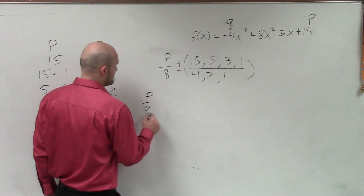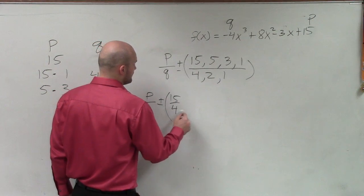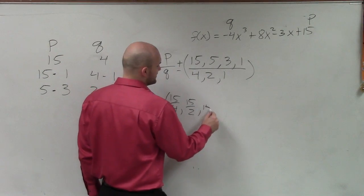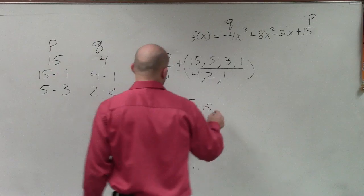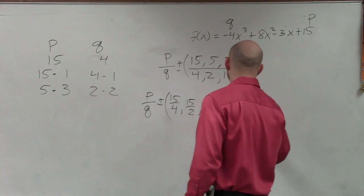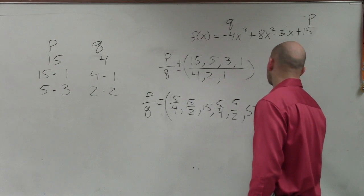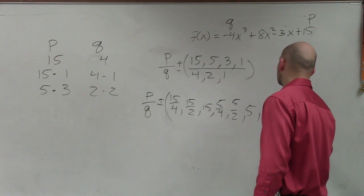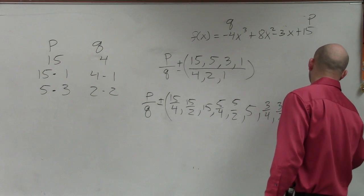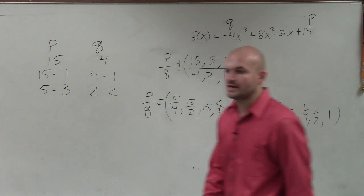So my final answer would be p over q plus or minus 15 over 4, 15 over 2, 15 over 1 is just 15. Then I can do 5 over 4, 5 over 2, 5 over 1 is just 5. I could do 3 over 4, 3 over 2, 3 over 1 is just 3. And I can do 1 over 4, 1 over 2, and 1 over 1. And that should be your final answer.